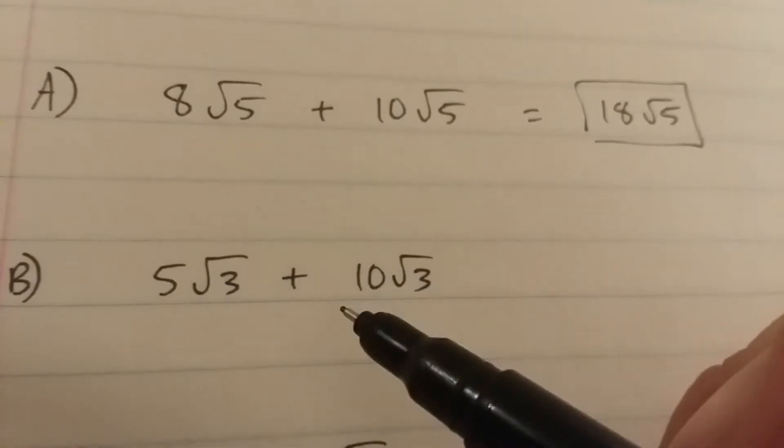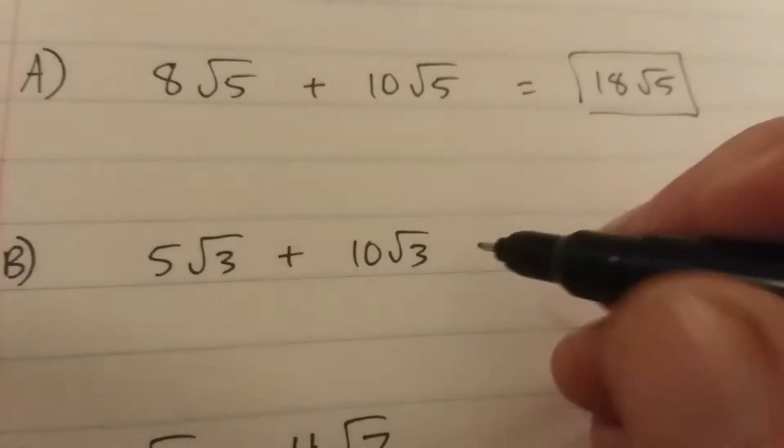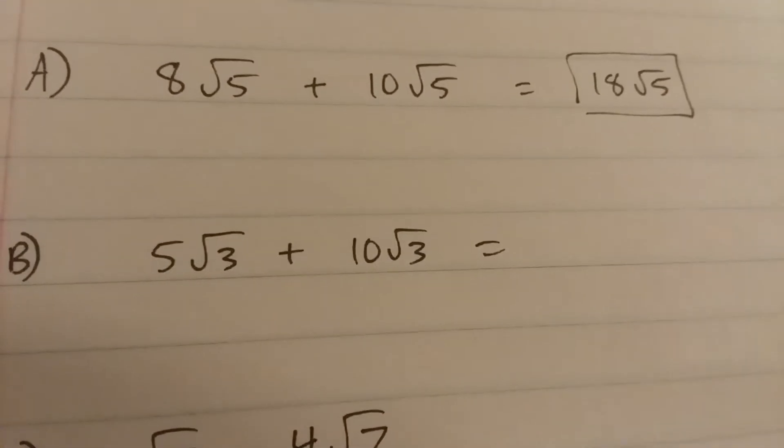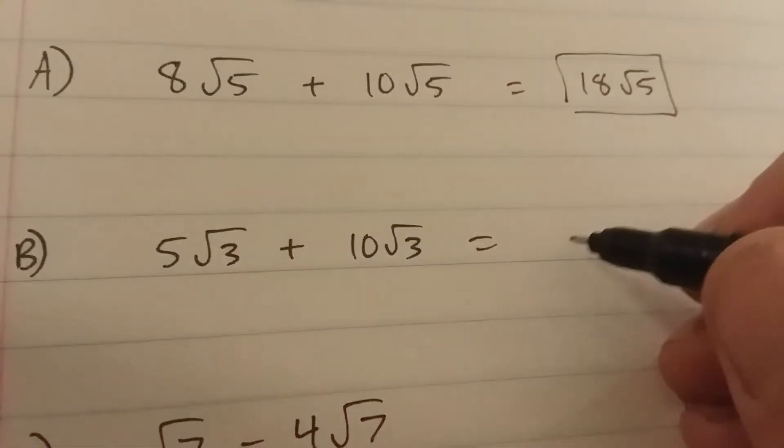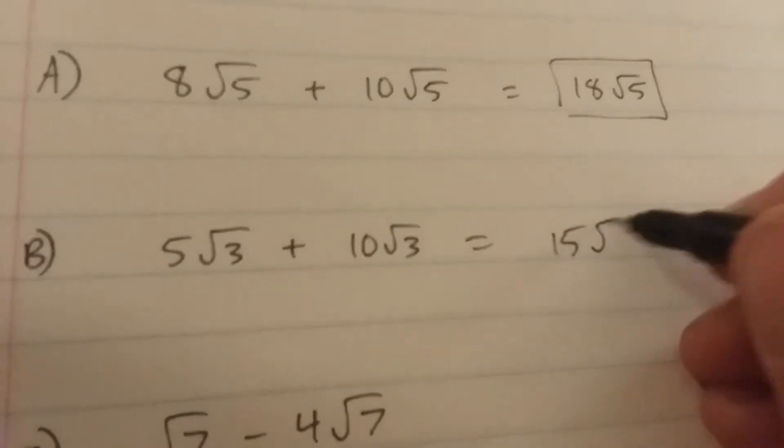Again, think of it as 5x plus 10x. The square root of 3 is working like x. So 5 plus 10 is 15, and then you just bring over the square root of 3.